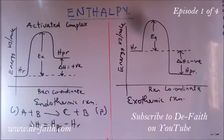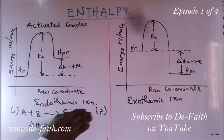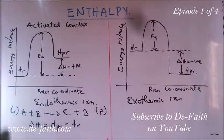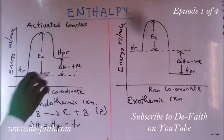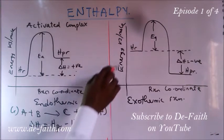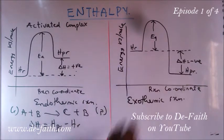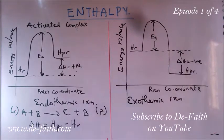In some cases, we may have higher heat at the product side than the reactant side — that is an endothermic reaction, and in this case we will have a positive delta H. But if the heat of the reactant is more than the heat of the product, then delta H will be negative. This can be shown from the energy profile for an endothermic reaction.